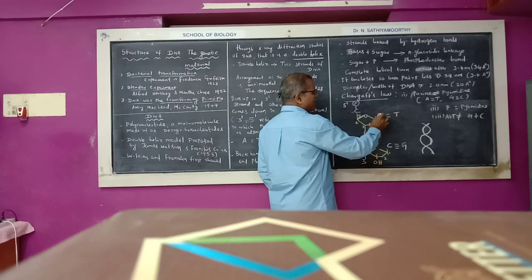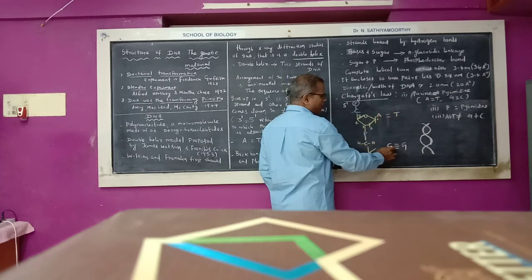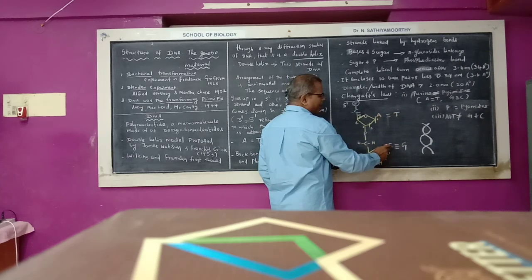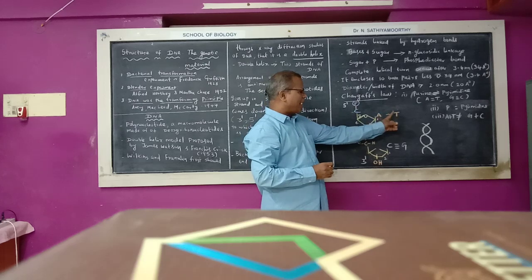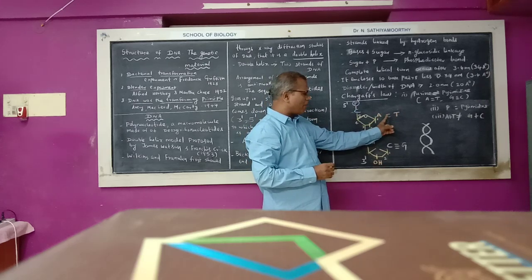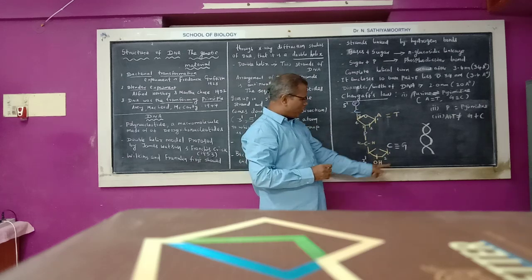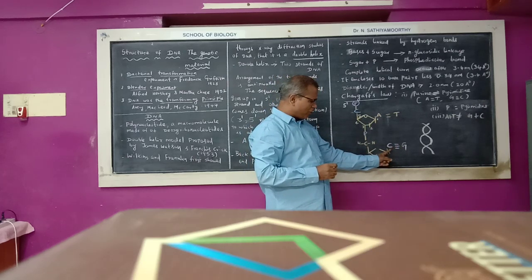Purine base adenine always pairs with pyrimidine base thymine with the help of two hydrogen bonds. Purine base guanine always pairs with pyrimidine base cytosine with the help of three hydrogen bonds.